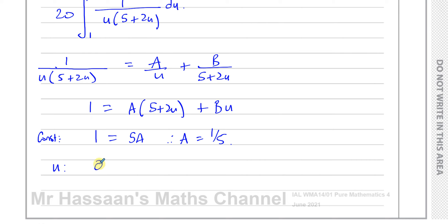And if I compare the u terms, on this side I have 0u. On this side I'll have a times 2u, which is 2a, and b times u, which is b. So I know a is 1 fifth. So I can say from here that 0 is equal to 2 over 5 plus b. Therefore, b is equal to minus 2 fifths. So I can say that this is therefore equal to 1 over 5u minus 2 over 5 times 5 plus 2u.